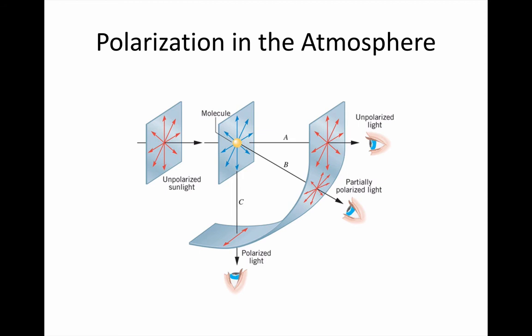The observer at A, straight ahead, sees all of the polarisations — in other words, unpolarised light — and anyone in between those two will see partially polarised light.